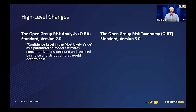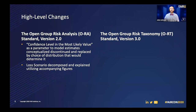First, high-level changes in ORA. We removed the confidence level in the most likely value. Instead, we're now emphasizing the choice of distribution made by the analyst. What this means is that the analyst can better model what they think they know about the risk scenario they're analyzing by picking the distribution that best models those results. We don't provide guidance on which distribution is best, and Open Fair does remain distribution agnostic — but this may be a PERT distribution or a Poisson distribution, depending on the knowledge of that analyst. We also take some inspiration from the Open Fair Risk Analysis Process Guide and decompose the loss scenario step-by-step, going from contact event all the way through to the secondary loss event, explained with accompanying figures.